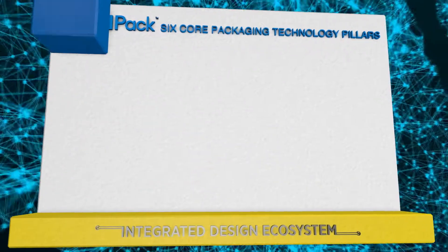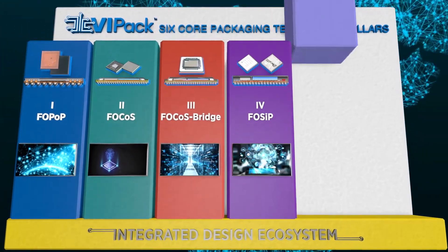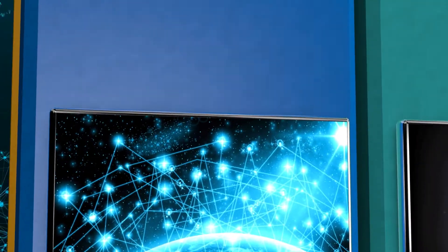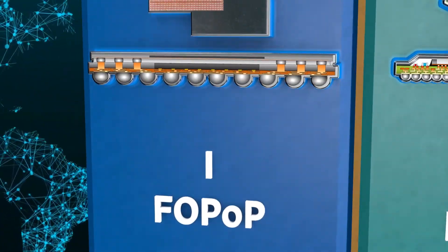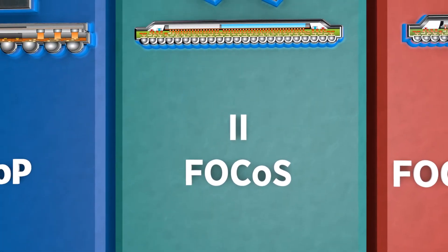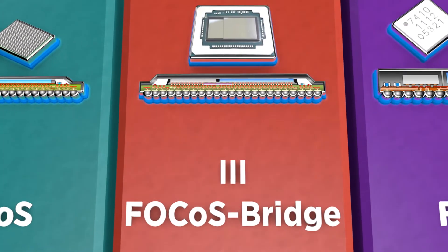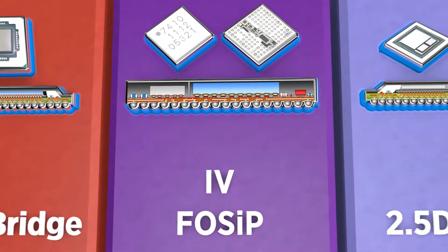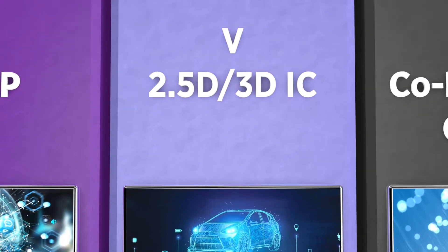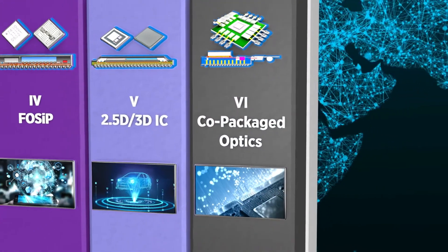ASE's VI-PAC is comprised of six core packaging technology pillars supported by an integrated design ecosystem. These technology pillars include ASE's high-density redistribution layer-based fan-out package-on-package, fan-out chip-on-substrate, fan-out chip-on-substrate bridge, fan-out system-in-package, as well as through-silicon VIA-based 2.5D and 3D IC, and co-packaged optics processing capabilities.